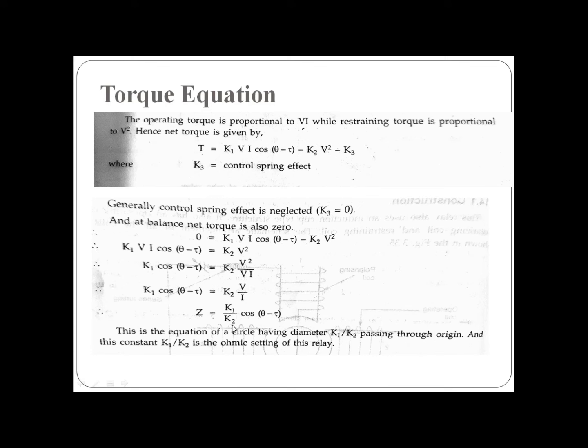Therefore, Z equals K₁/K₂ cos(θ - τ). This is the equation of a Mho relay, and this is also known as the equation of a circle having a diameter of K₁/K₂ passing through the origin. This constant K₁/K₂ is the ohmic setting of the relay.